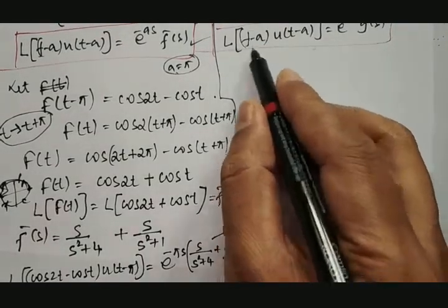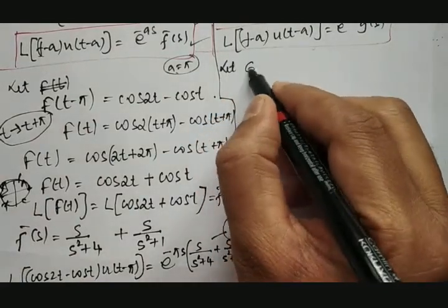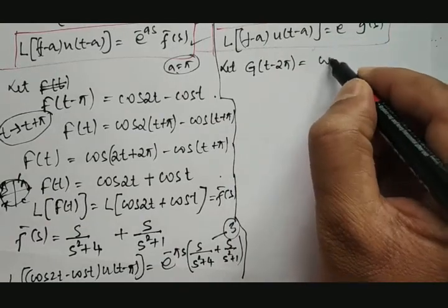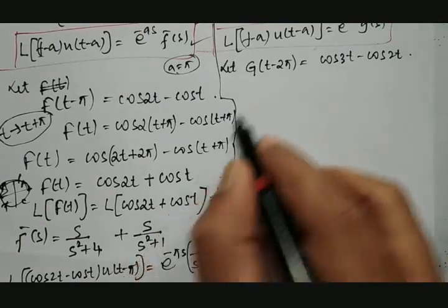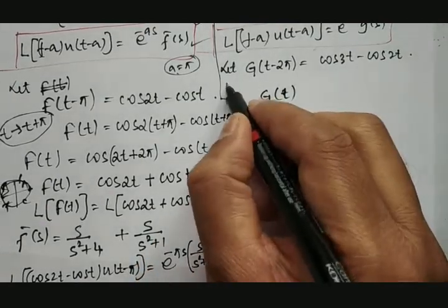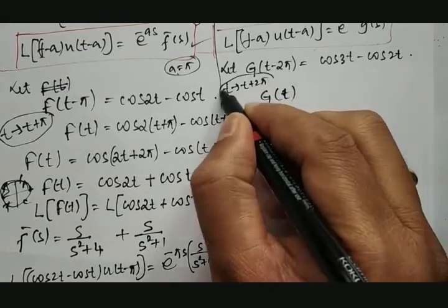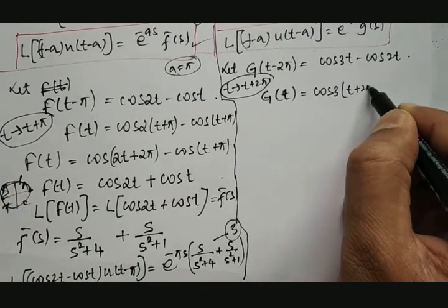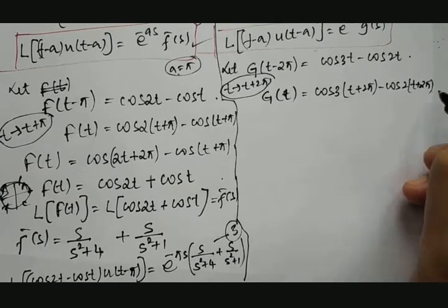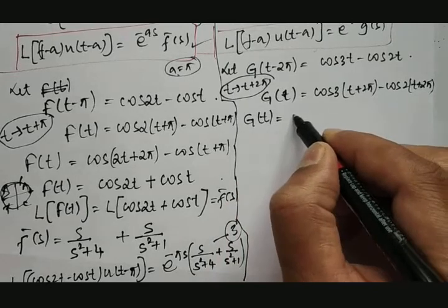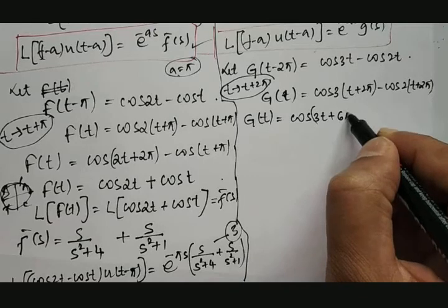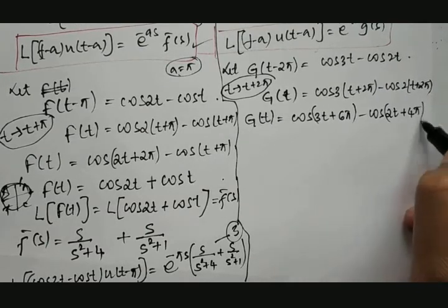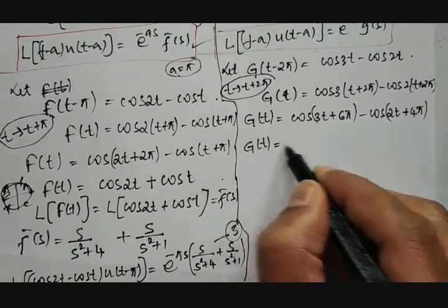Similarly, for equation 4, we take g(t − 2π) = cos 3t − cos 2t. To find g(t), replace t by t + 2π: g(t) = cos 3(t + 2π) − cos 2(t + 2π), which becomes cos(3t + 6π) − cos(2t + 4π).